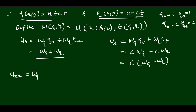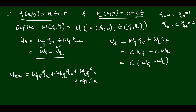Now we find Uxx by differentiating Ux with respect to x: Uxx equals (w_zeta_zeta times zeta_x plus w_zeta_eta times eta_x) plus (w_eta_zeta times zeta_x plus w_eta_eta times eta_x). Substituting zeta_x equals 1 and eta_x equals 1, we get Uxx equal to w_zeta_zeta plus 2 w_zeta_eta plus w_eta_eta.